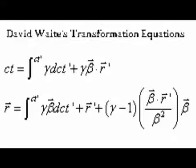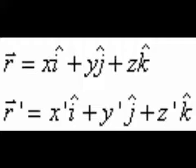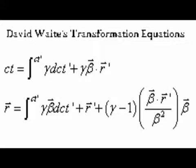In setting up these transformation equations, I've defined an r vector — a 3-vector, not a true vector of relativity — and a beta 3-vector, where the x, y, and z components of these velocities are to be expressed as functions of the proper frame coordinate time. Once you do that, these transformation equations will give you the coordinate transformation from an arbitrarily accelerated observer's coordinates to an inertial frame's coordinates.